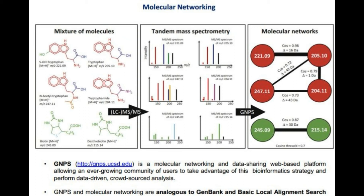In simple terms, a molecular network is a visualization strategy for untargeted mass spectrometry data. We have developed the world's largest repository and data analysis tool for tandem mass spectrometry data, named the Global Natural Product Social Molecular Network, or GNPS database. It is used to decipher cryptic metabolites during experiments, using information already present in the GNPS database.